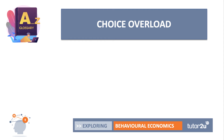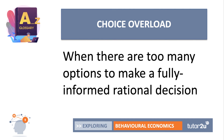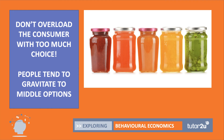Choice overload — a very important concept. In economics we assume normally that choice is good, giving consumers a choice of product helps them make perhaps better informed decisions. But there's always the risk of choice overload, and that's when there are too many options — just too many options to make a fully informed rational decision. There's a very famous jam study — beyond a certain number, around six or eight types of jam, consumers' utility and satisfaction went down because they literally had too much choice, too much thinking to do.